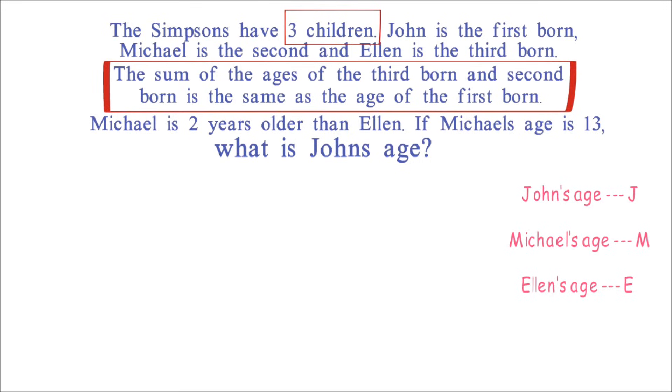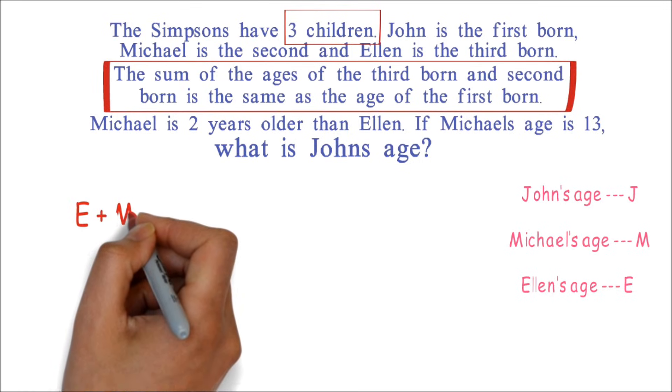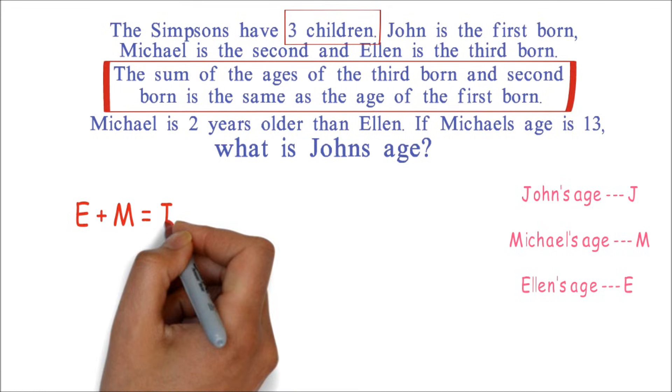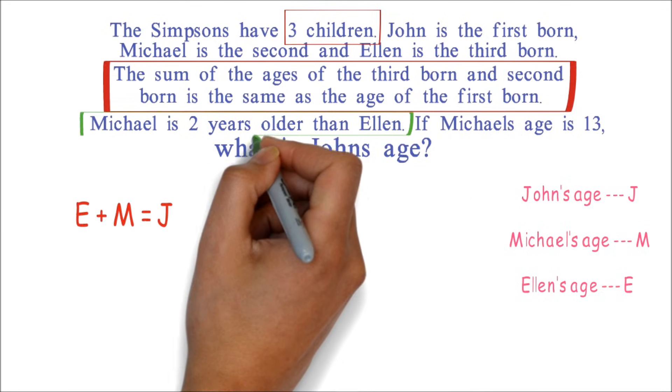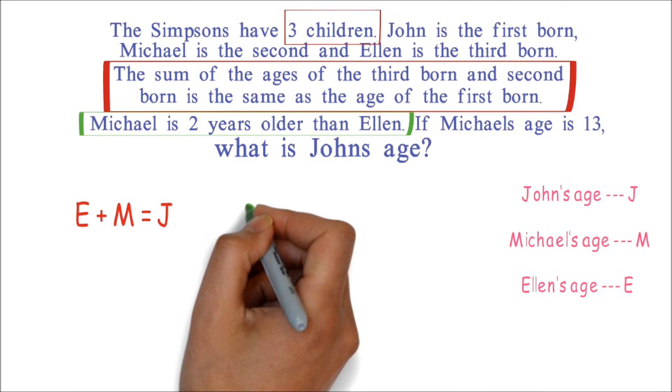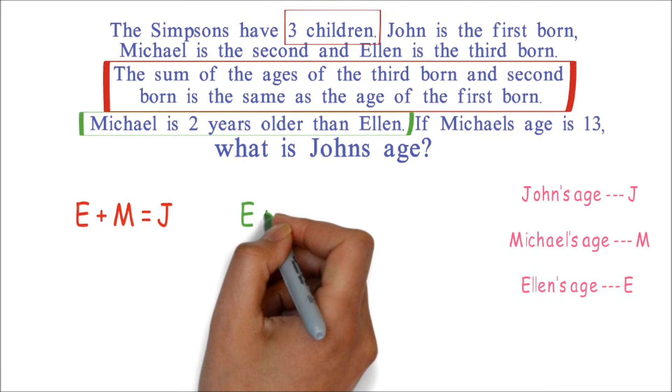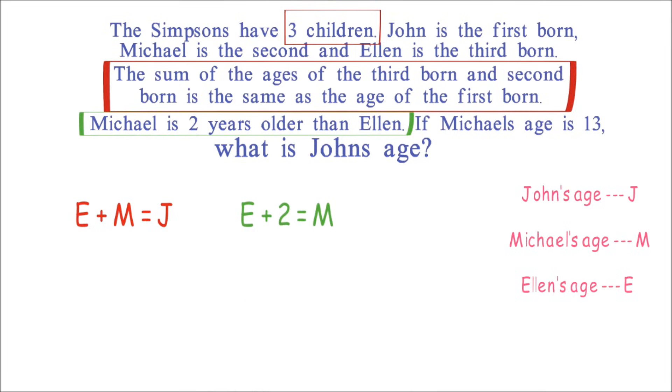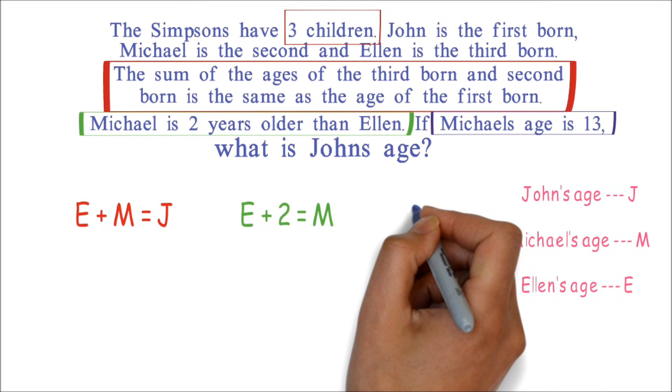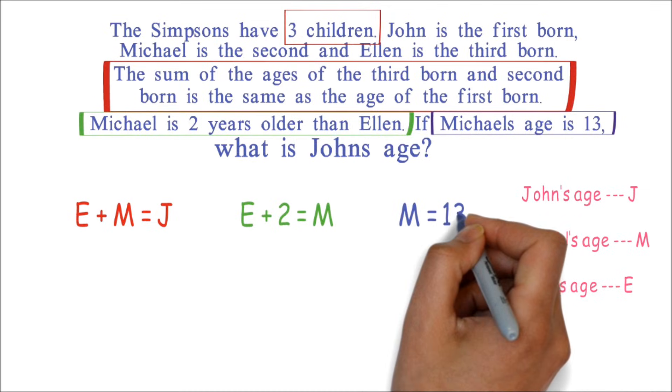So we can say E plus M equals J. The next information we know is that Michael is two years older than Ellen, which we can represent by E plus 2 equals M. The last information given is that Michael is 13 years. We have M equals 13.